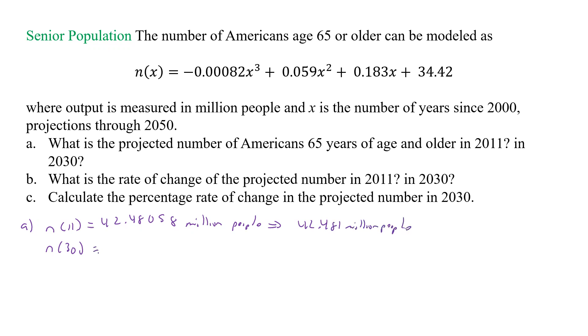Now, what about 30? Well, then I just go in and replace 11 with 30 in all cases, and I will get 70.87, and that's million people. And that's just the value you get.